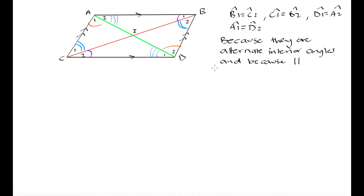Because our lines are parallel and these are all pairs of alternate interior angles, we know these angles are equal. In addition, because this is a parallelogram, we know that side AB equals side CD in length, and side AC equals side BD in length. That's because in a parallelogram, opposite sides are not only parallel but also equal in length. So we mark these two pairs of equal opposite sides.